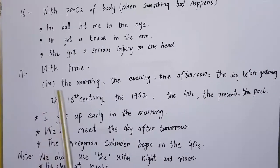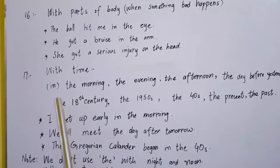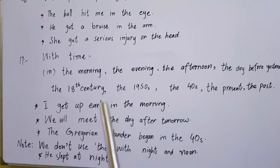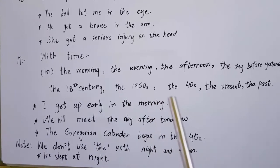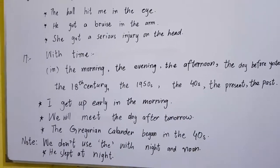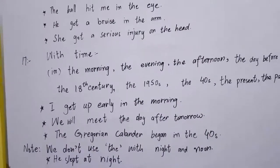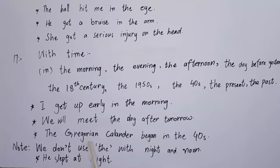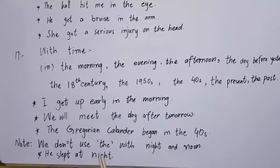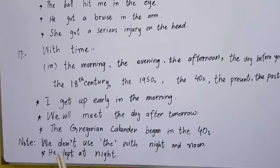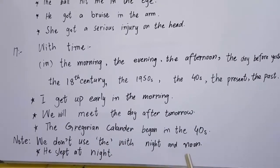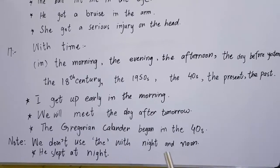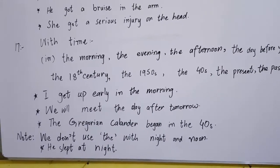Rule number 17: we use 'the' with time expressions. For example: in the morning, the evening, the afternoon, the day before yesterday, the 18th century, the 1950s, the 40s, the present, the past — because they are specific. 'We get up early in the morning.' 'We will meet the day after tomorrow.' 'The Gregorian calendar began in the 40s.' Note: we don't use 'the' with 'night' and 'noon' — for example: 'He slept at night', not 'at the night'.